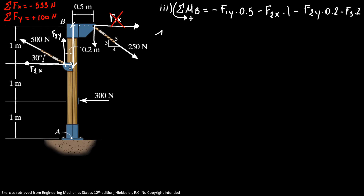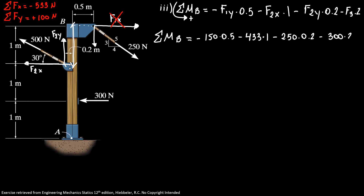So the sum of moments about B equals minus 150 times 0.5, minus 433 times 1, minus 250 times 0.2, minus 300 times 2.